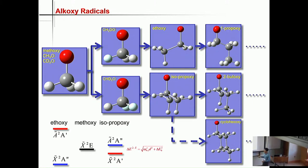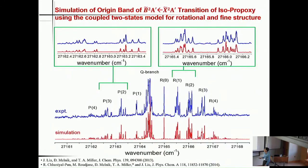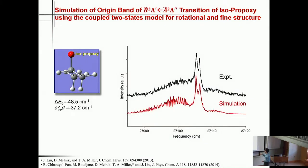Terry's group at Ohio State took these spectra in the 2000s, but until we developed what we call the coupled two-state model, nobody was able to simulate the spectra. Finally, by using the model, we were able to achieve almost line-to-line match for this relatively complex molecule. This is the X to B transition. The A to B transition is for technical reasons not very well resolved, but we were able to reproduce the rotational contour. We can now determine delta E naught and A·zeta_E·D pretty accurately.